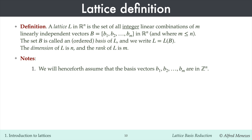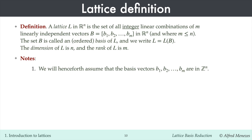From now on, we'll assume that the basis vectors b1, b2 up to bm have integer coordinates. In this case, the lattice L is comprised of all vectors x1·b1 plus x2·b2 plus ... xm·bm, where the coefficients x are integers. All components of every lattice vector are integers, and so L is a subset of Z^n, and is called an integer lattice.